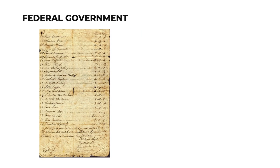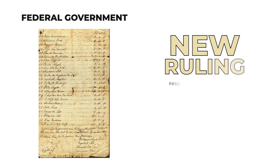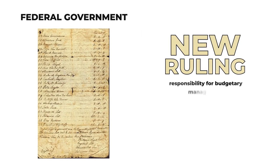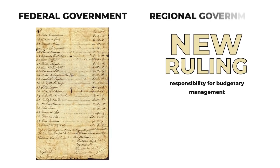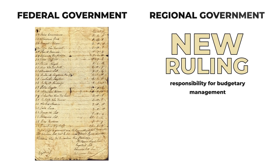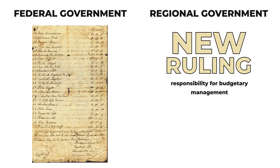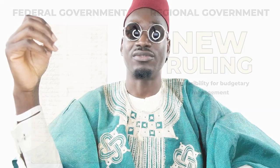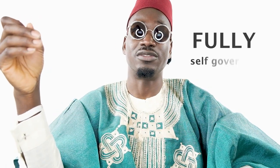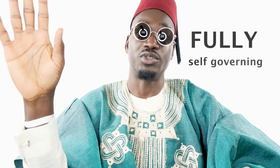An example of something that wasn't on the list was budgetary management, which was transferred from the federal government to the regional government — this increased public spending on services and projects. The constitution also gave each of the three regions the option to become fully self-governing, but they weren't forced to. However, even if they chose to, Nigeria would still be under British control regardless.